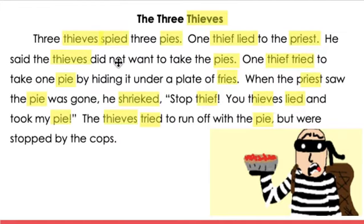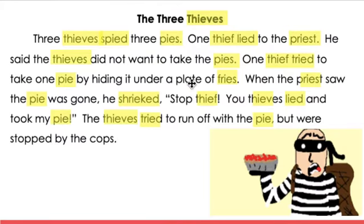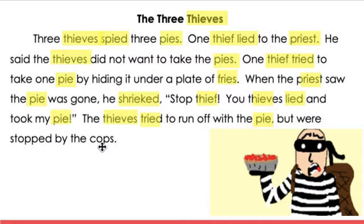The Three Thieves. Three thieves spied three pies. One thief lied to the priest. He said the thieves did not want to take the pies. One thief tried to take one pie by hiding it under a plate of fries. When the priest saw the pie was gone, he shrieked, Stop, thief! You thieves lied and took my pie. The thieves tried to run off with the pie, but were stopped by the cops.